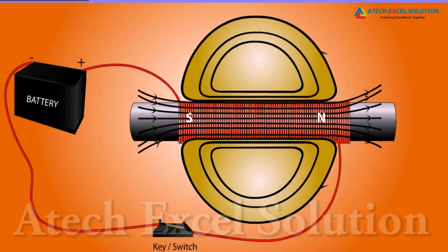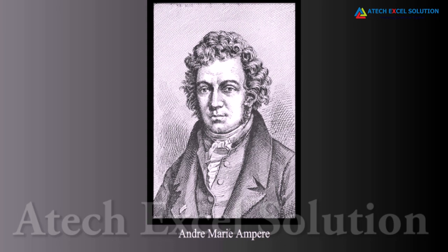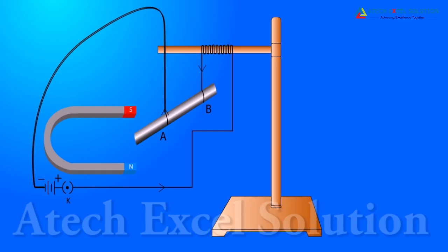The magnet formed by such a method is called an electromagnet. French scientist André-Marie Ampère proved that magnetic field exerts an equal and opposite force on a current carrying conductor.